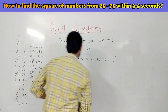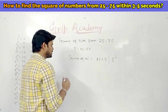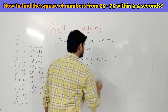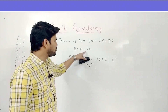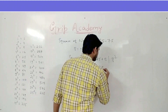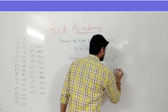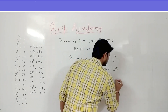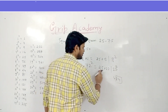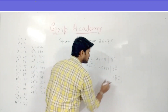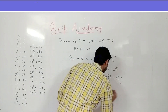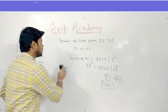Let's take another example. Consider you have to find the square of 72. Base will be 72 minus 50 equals 22. So 25 plus 22, slash 22 squared. 22 squared is 484, so 84 stays here and 4 is carry. 25 plus 22 is 47, plus carry 4 is 51. So the answer is 5184.